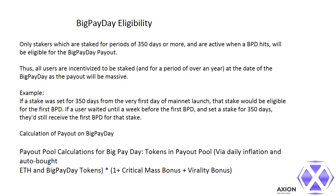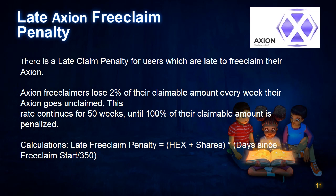Calculation of payout on Big Pay Day. Payout pool calculations for Big Pay Day: tokens in payout pool via daily inflation and auto-bought ETH, and Big Pay Day tokens × (1 + critical mass bonus + virality bonus). Late Axion free claim penalty: there is a late claim penalty for users who are late to free claim their Axion. Axion free claimers lose 2% of their claimable amount every week their Axion goes unclaimed. This rate continues for 50 weeks, until 100% of their claimable amount is penalized. Late free claim penalty = HEX shares × (days since free claim start / 350).